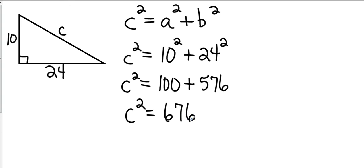And so now I have C squared equals 676. Now to get rid of the C squared from the last section, I'm going to take the square root of both sides. And after I've taken the square root of 676, that gives me an answer of 26. So my missing side is 26.